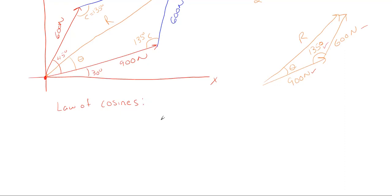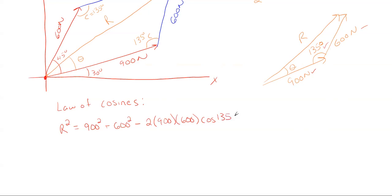Looking at my triangle, I have two sides known in magnitude and the angle opposite my unknown side is known. Whenever that happens, you want to use the law of cosines to solve for that opposite unknown side — which is our resultant. The equation is: resultant squared equals 900 squared plus 600 squared minus two times 900 times 600 times cosine of 135 degrees. Taking the square root of both sides — and a lot of people forget to take the square root, so make sure you do — this resultant value comes out to be 1390.6 Newtons.